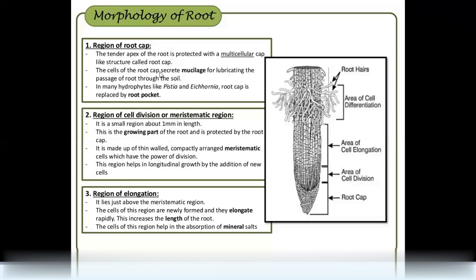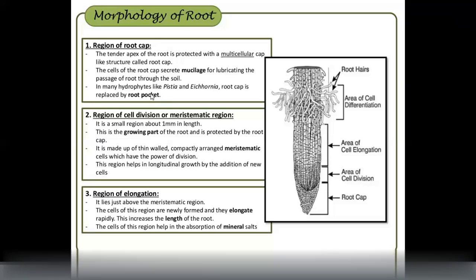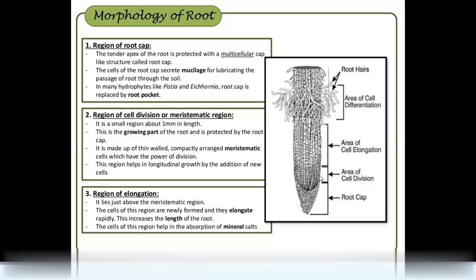First is the region of the root cap. It is tender — a little soft — and multicellular. The root cap has a lot of mucilage. The mucilage acts as a lubricant between the soil and the roots, helping the root penetrate the soil. Examples include pistilla and equinoria.